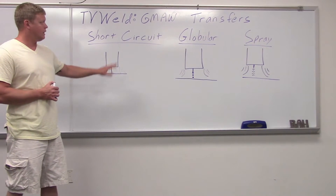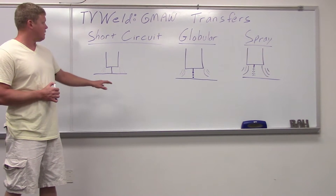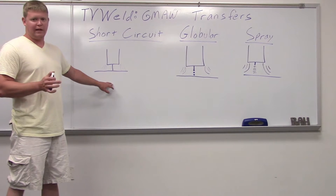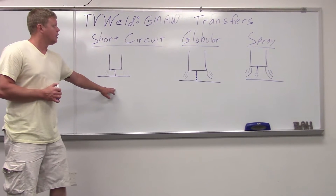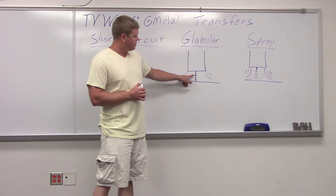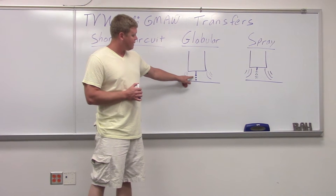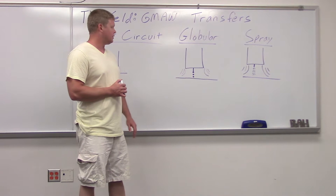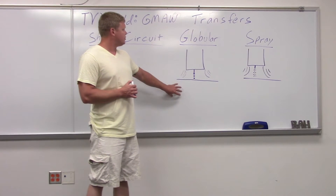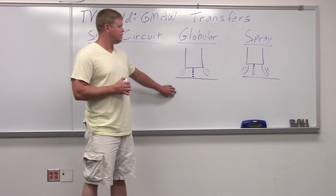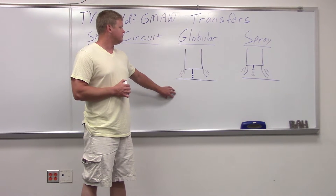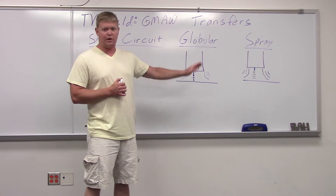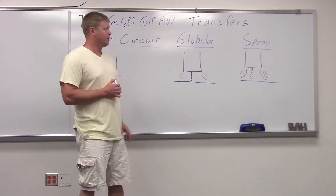If you want to go to globular, I always tell people just take your parameters from short circuit and increase your voltage. What globular does is kind of balls up on your wire and then these big droplets float across to the weld — that's why it's called globular. It's generally considered undesirable, though there are some applications for it. Usually if you're in globular, you're in between short circuit and spray and you're going to want to either go one way or the other.